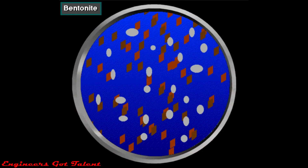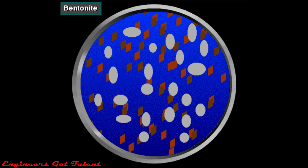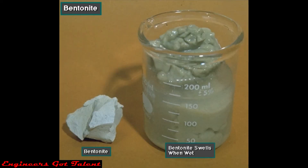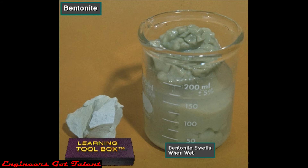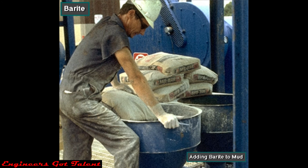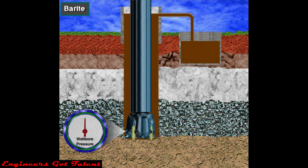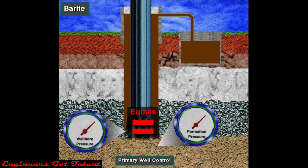In water or oil-based drilling mud, crew members usually add a clay called bentonite or a similar mineral. Bentonite swells in water; therefore, it thickens the mud and gives it viscosity to help clean the cuttings from the hole and provide other desirable properties. Barite is a heavy mineral. The crew adds barite to mud to make it heavy or dense. Barite is over four times heavier than water. Dense mud exerts more pressure than light mud. Weighted mud controls formation pressure — this is called primary well control.